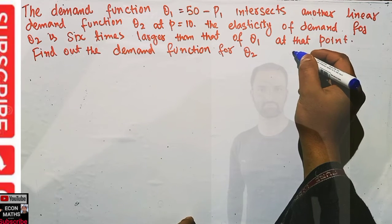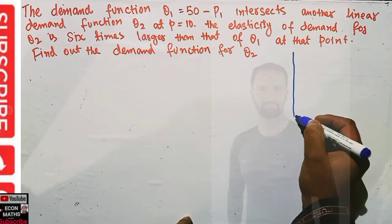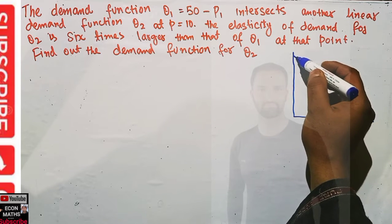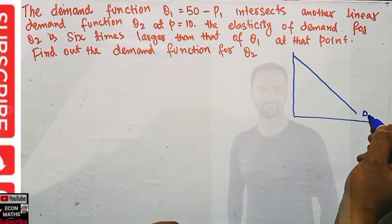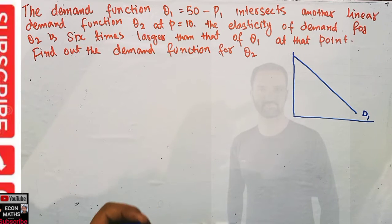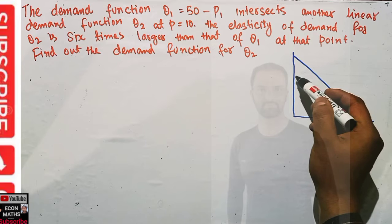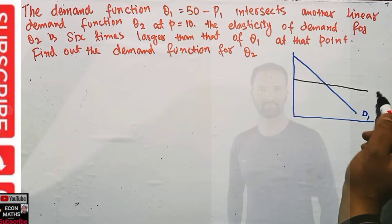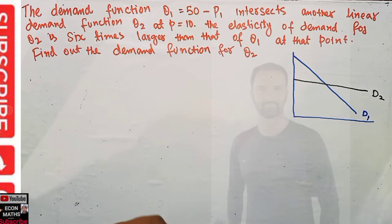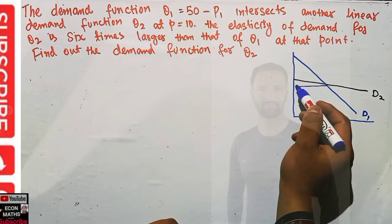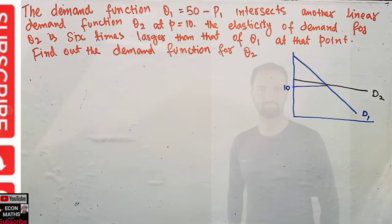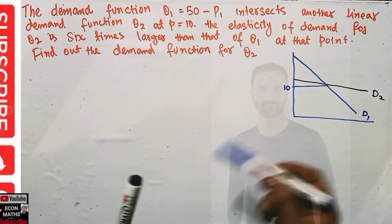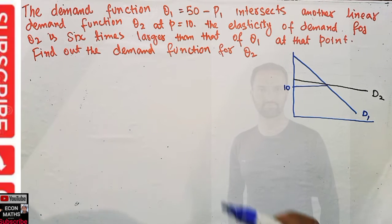Let me give a rough sketch of what this actually means. We have demand function one, d1, and demand function two, d2. They intersect at a point when price is equal to 10. We have to find out the demand function for q2.